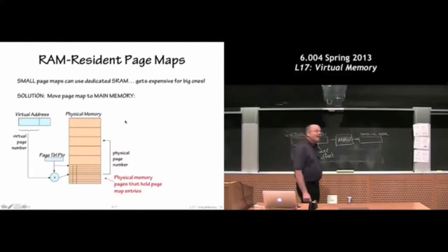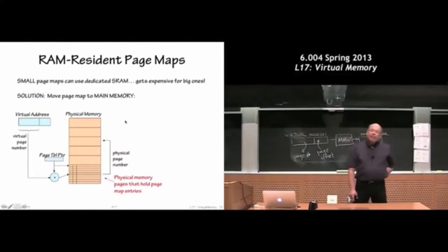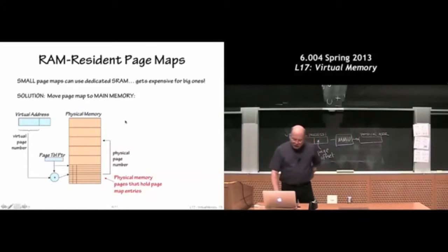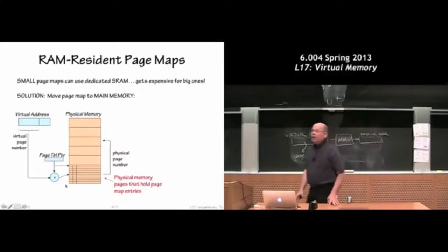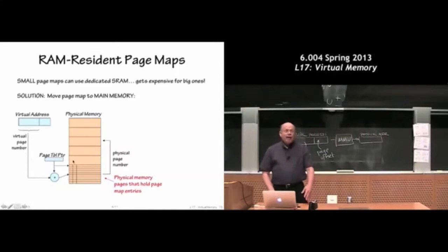So plan A, which we'll modify quickly but at least gets the job done, is to say, well look, we don't really want to store that page map in a special piece of memory that we went out and bought. What we want to do is just store it in main memory.